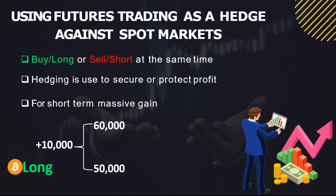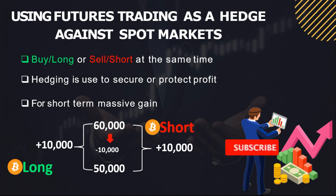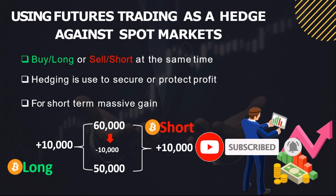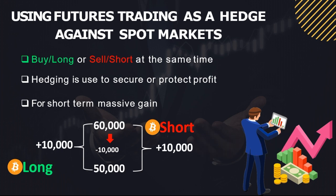Once you activate hedge mode on your Binance account, you can open both positions. So once Bitcoin is at sixty thousand and you want to secure your profit, all you need to do is go short at sixty thousand. When you go short and the price drops from sixty thousand to fifty thousand, the short position will be making ten thousand dollars profit for you while the long position will be losing ten thousand. Whichever way you look at it, you are still in profit. Even if it goes below forty thousand, the short position will still be locking up your profit.